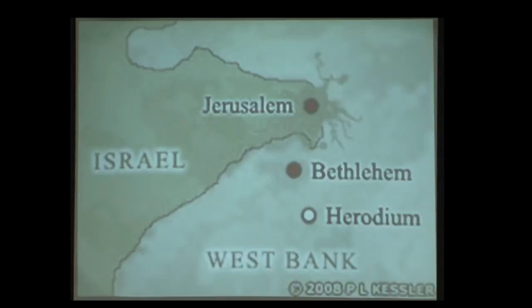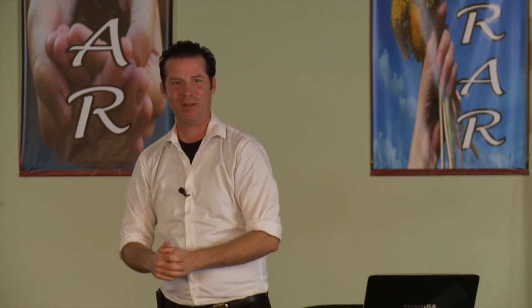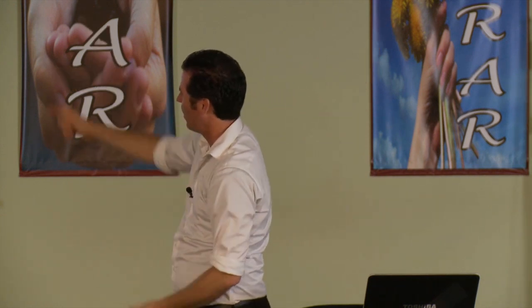Just south of Jerusalem you see Bethlehem, and just southeast is the Herodium — named after Herod the Great, though not mentioned in the Bible. Herod had a network of fortresses: Alexandrium, Kipras (named after his mother), Macarius east of the Jordan where John the Baptist was imprisoned, the famous Masada on the southwest of the Dead Sea, Hercania (with supposedly buried treasure according to Josephus), and the Herodium.